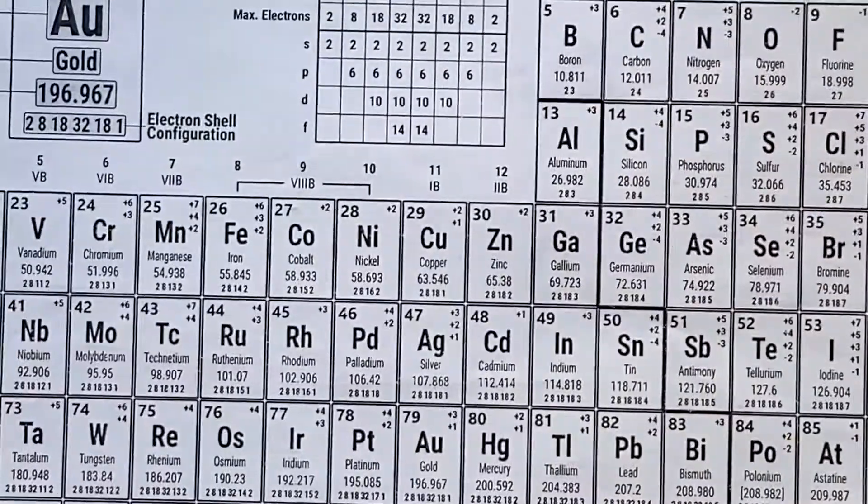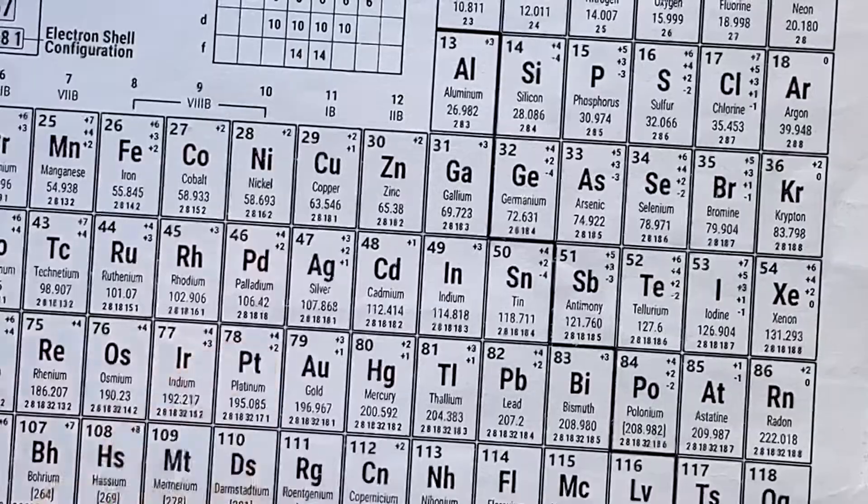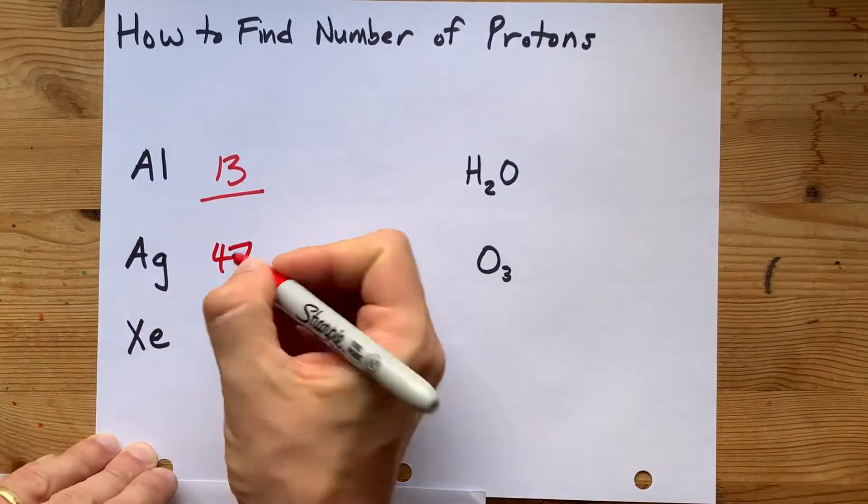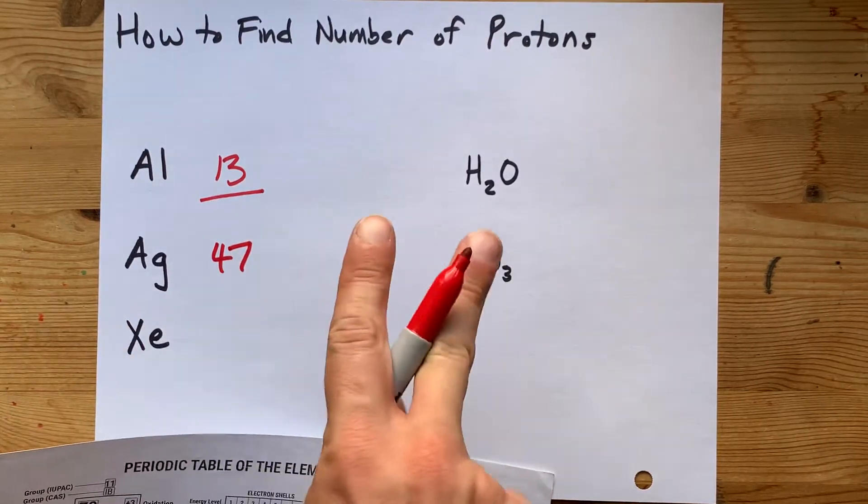Let's do a couple more here. Silver AG is element number 47. That means 47 protons in each silver atom. That's actually what makes it an atom of silver.